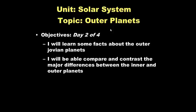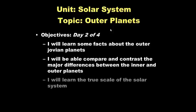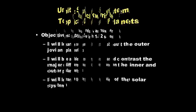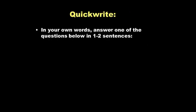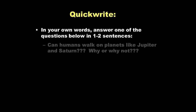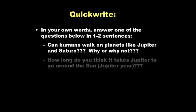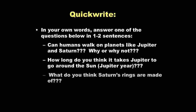You will be able to compare and contrast the major differences between the inner and outer planets — what we talked about on our first day of notes versus what we're covering today. We'll also learn the true scale of the solar system. Quick write: answer one of the questions below in one to two sentences — can humans walk on planets like Jupiter and Saturn, and why or why not? How long do you think it takes Jupiter to go around the Sun? What do you think Saturn's rings are made of?